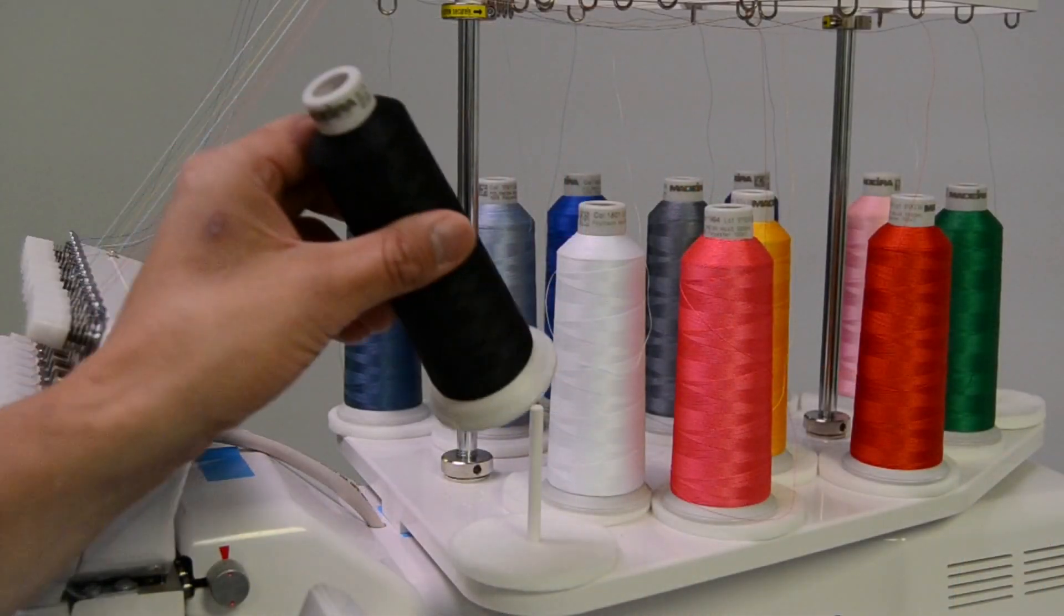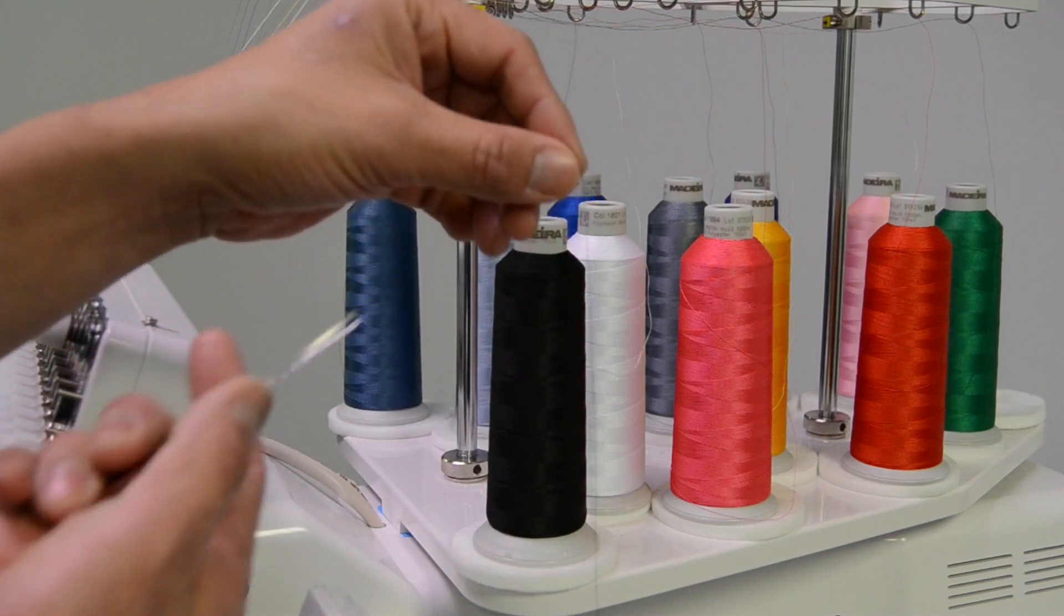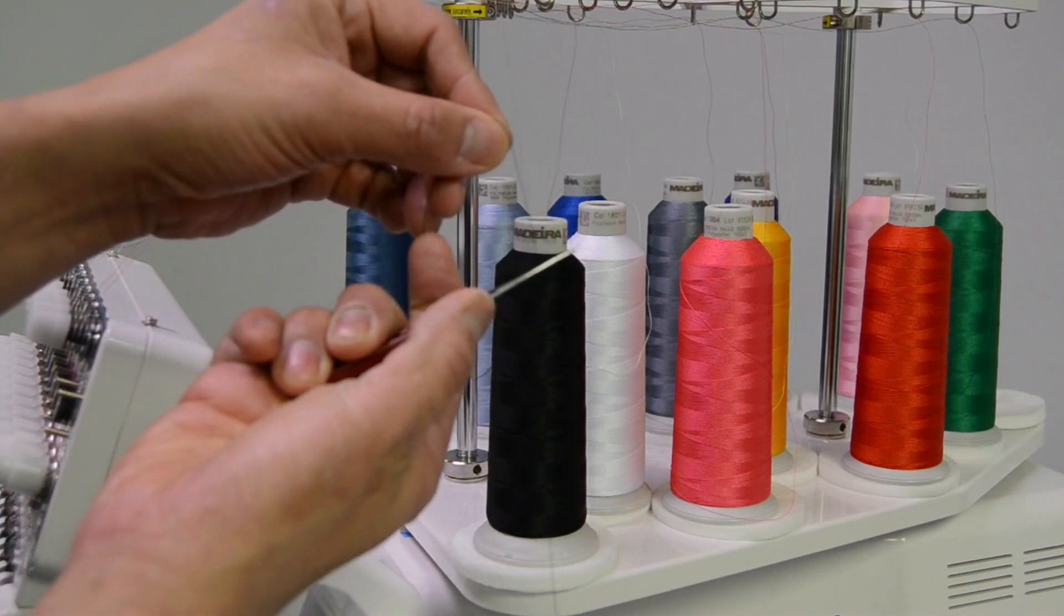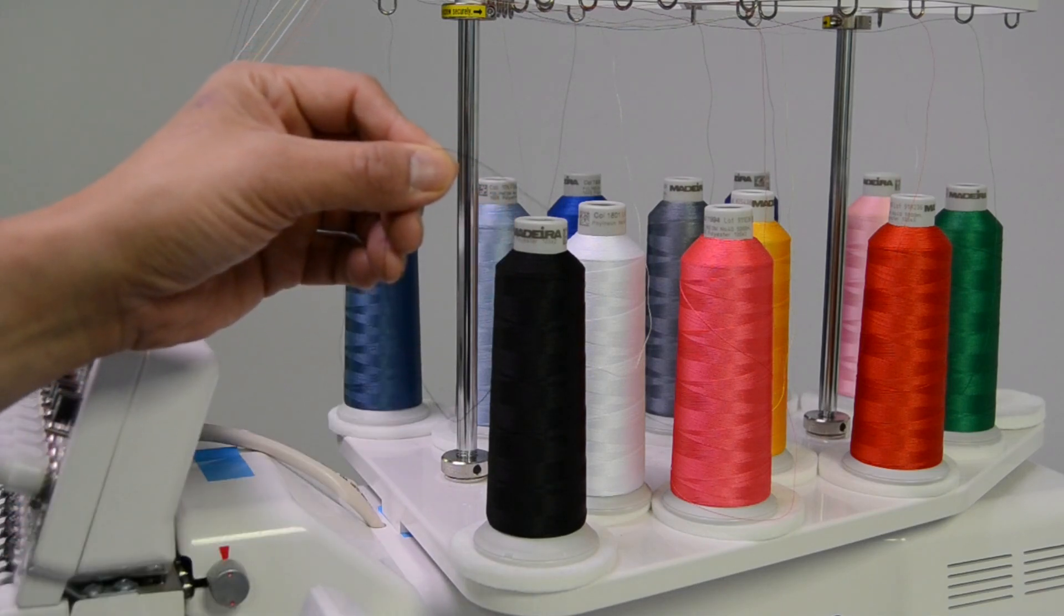Start by placing your cone directly on the spindle where you want it. Unwind enough thread for your purpose. Cut a clean end and try not to handle the last couple of inches to keep the end clean as you're threading it through the thread path.